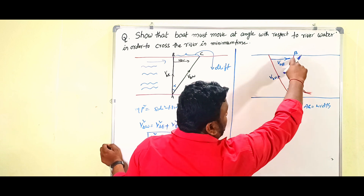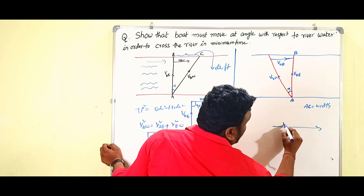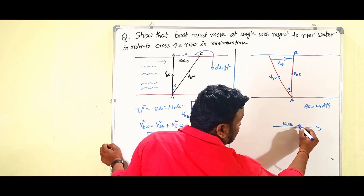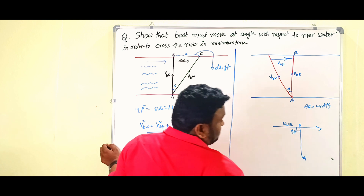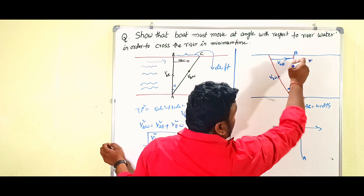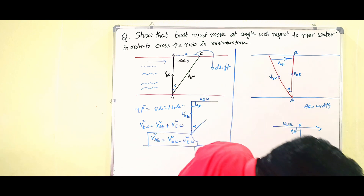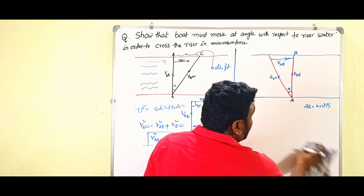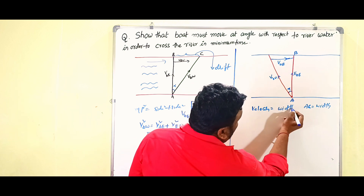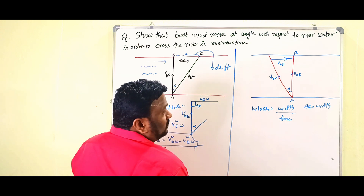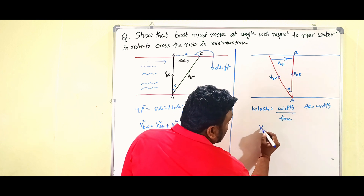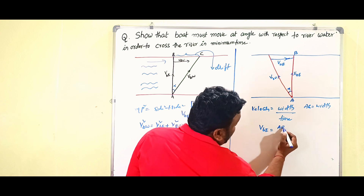The path must be along AB. The direction of water is v_we and the boat must move along the width of the river, making 90 degrees with the water flow. We know that velocity equals width of the river divided by time. So v_be = AB / t, where AB is the width of the river.